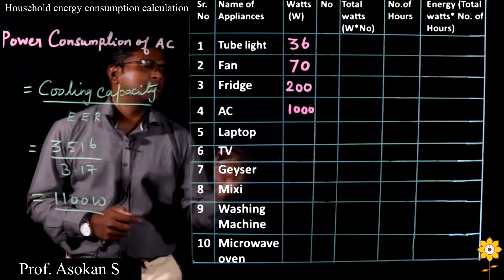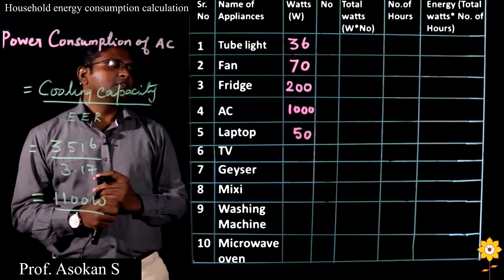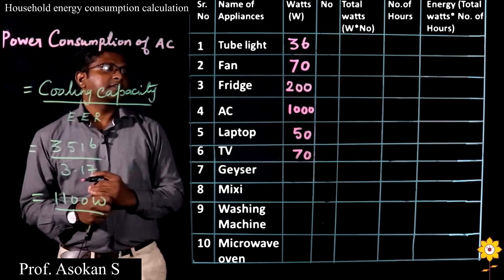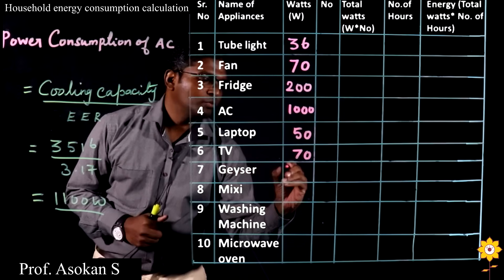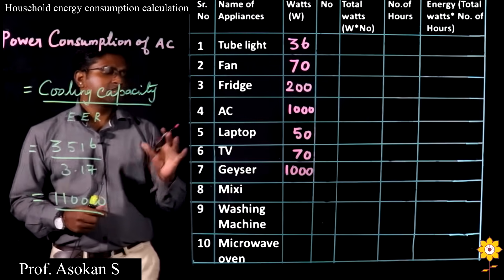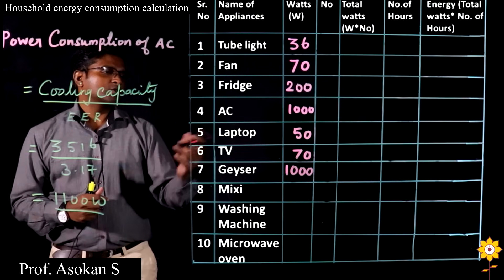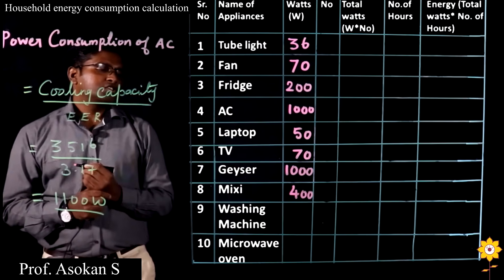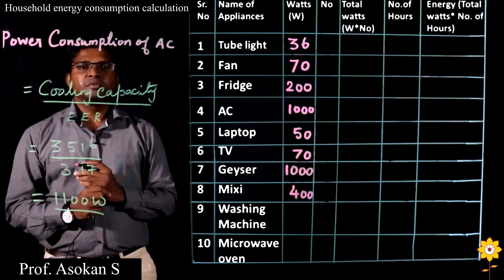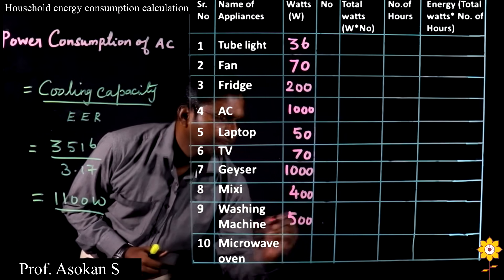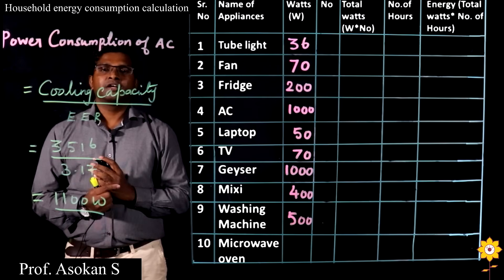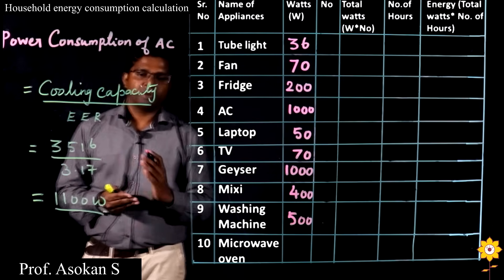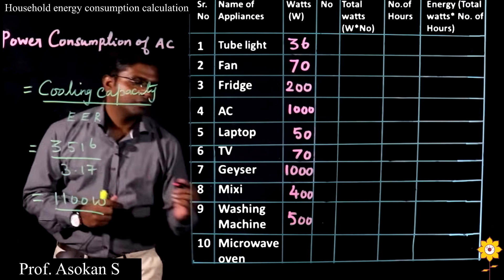Then laptop — each and every laptop consumes around 50 Watt. And TV: I will take a 45-inch TV at 70 Watt for the higher end. Then geyser — geyser consumes more energy, so the power would be 1000 Watt. This is a standard value; it may be 1500 or 2000 depending on your appliance. Then mixie, I take as 400 Watt — again a standard value. Then washing machine: the latest washing machine consumes 500 Watt. Then microwave oven: it operates in 3 modes — grill mode, oven mode, and convection mode. Convection mode consumes more power, so I take an average value of 1500 Watt.